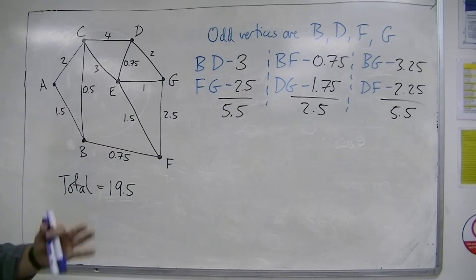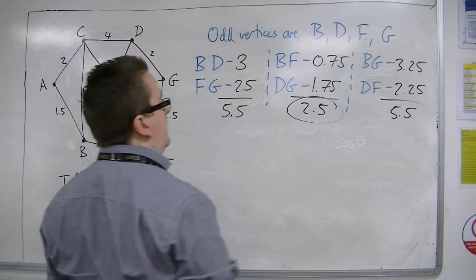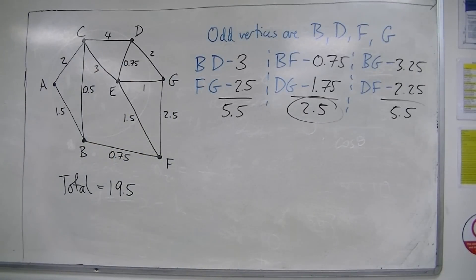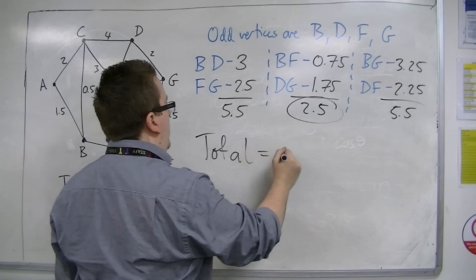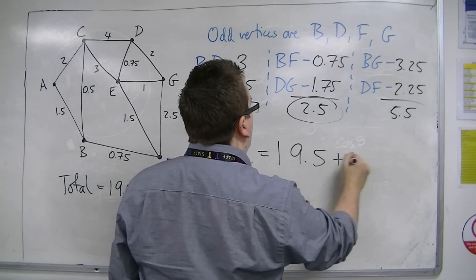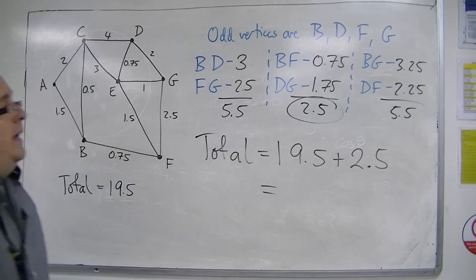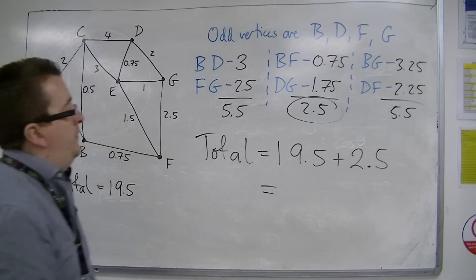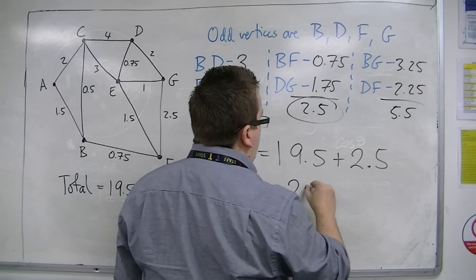So clearly, the shortest will be this one. OK, 2.5. And so the total will be equal to 19.5 plus the extra two edges added on top, extra two routes. So 19.5 plus 2.5 is 22.